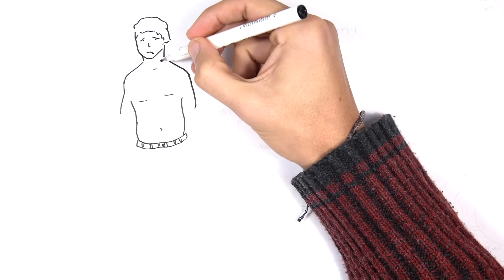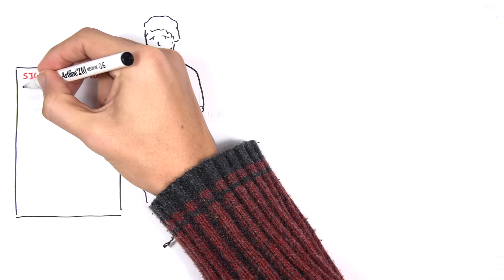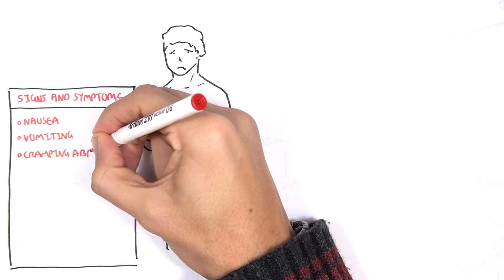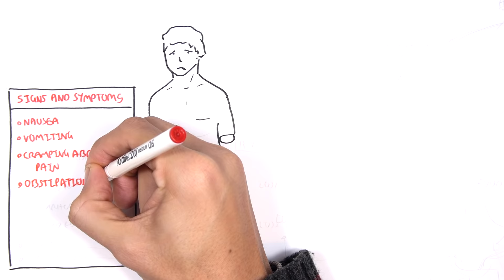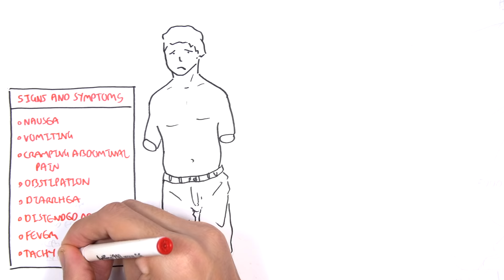In this video we're going to look at bowel obstruction. Let's first begin with the signs and symptoms and how a person can present. The signs and symptoms of a bowel obstruction include nausea, vomiting, cramping, abdominal pain, obstipation — an inability to basically do a poo — possibly diarrhea, a distended abdomen, fever, as well as tachycardia.